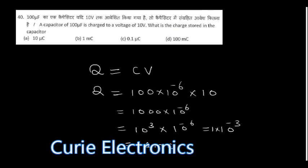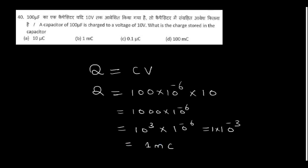A capacitor of 100 microfarads is charged to a voltage of 10 volts. What is the charge stored in the capacitor? We can simply put the equation Q equals CV. If you simplify, you will get one millicoulomb.